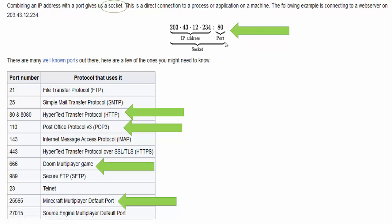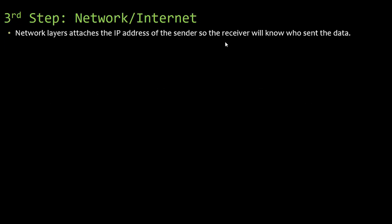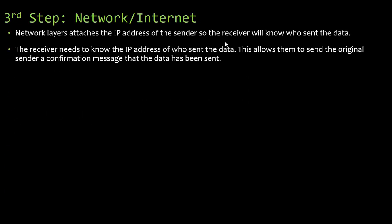The port number is attached to the packet along with where it is going. After that, we reach the network/internet layer. The network layer attaches the IP address of the sender so the receiver will know who sent the data. This allows the receiver to send the original sender a confirmation message saying the data has been received and they don't need to keep sending it.